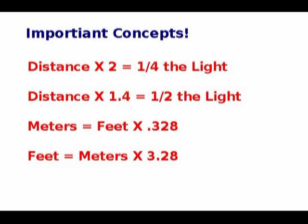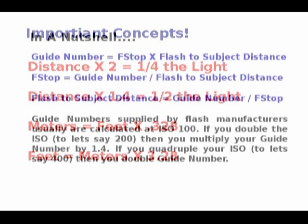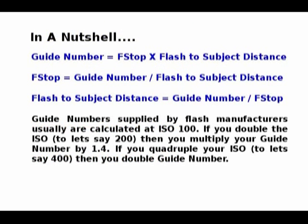If you want to convert a guide number expressed in feet to meters, you multiply the feet times 0.328 to receive the meter equivalent. Those are important concepts — boring, but important. So, what is a guide number? A guide number is basically a number, usually determined at ISO 100, indicating the output of the flash required to do a normal exposure.